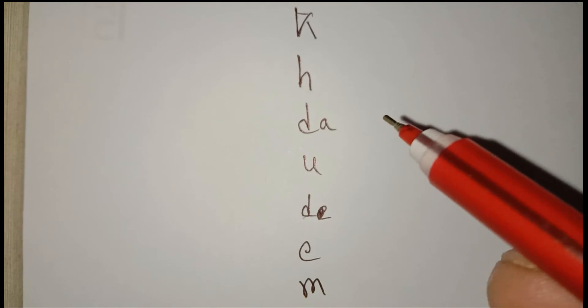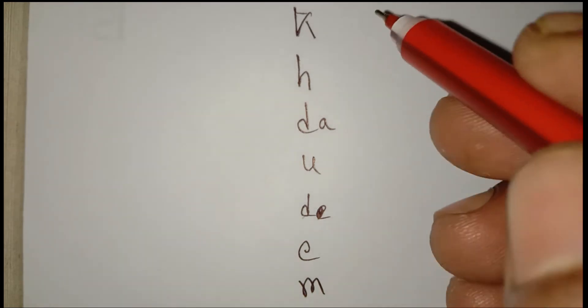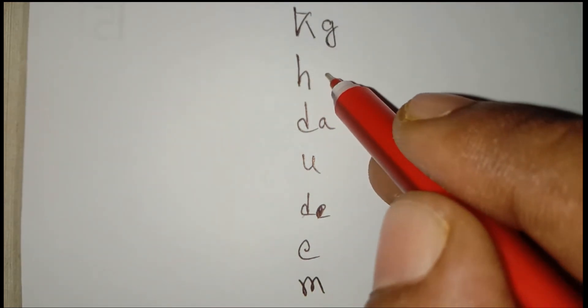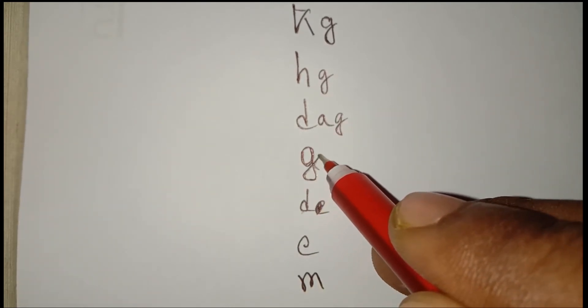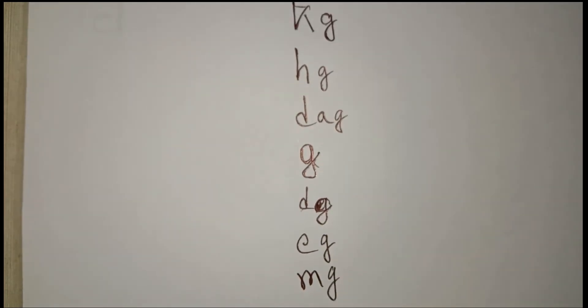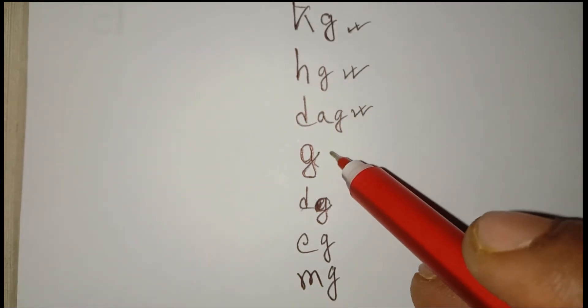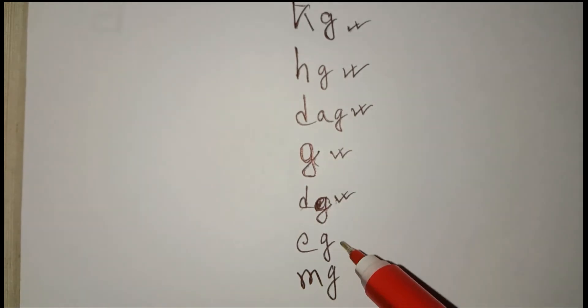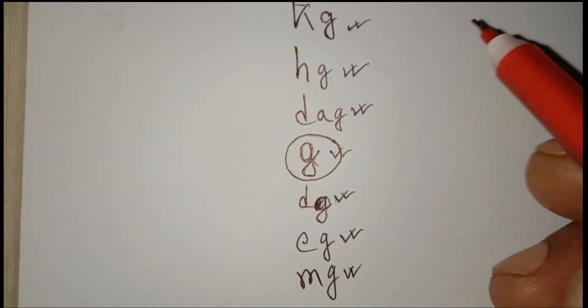Now, suppose you have to convert kg to gram. Instead of unit, you have to use gram. So: kilogram, hectogram, decagram, gram, decigram, centigram, milligram. Now suppose you have to convert all into gram.